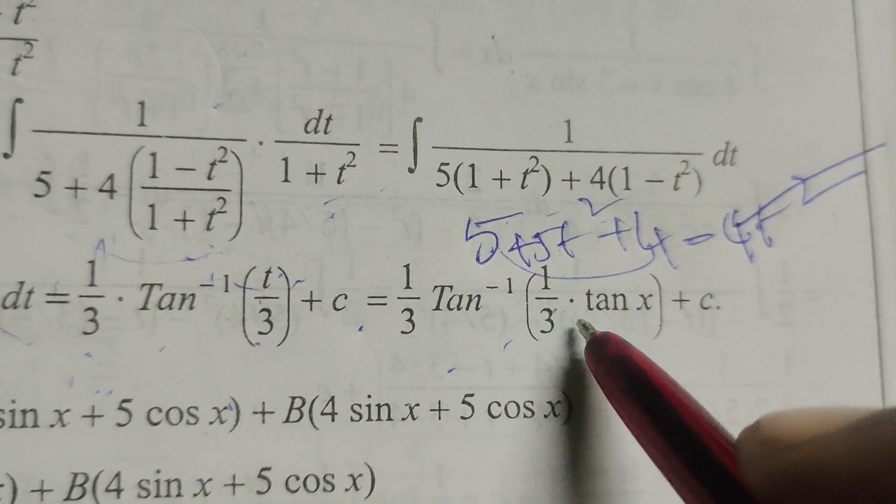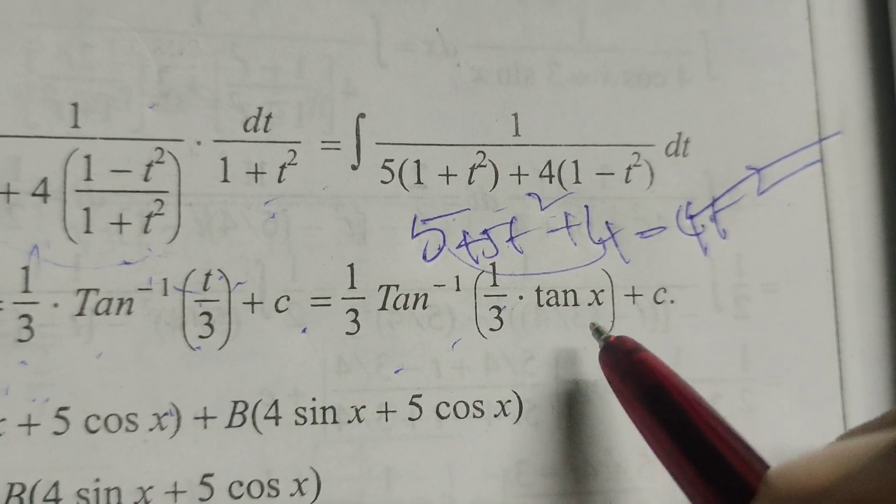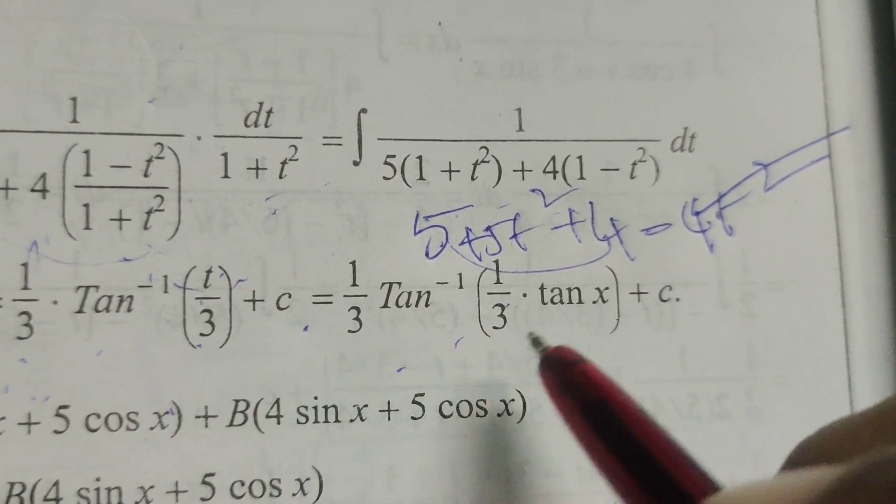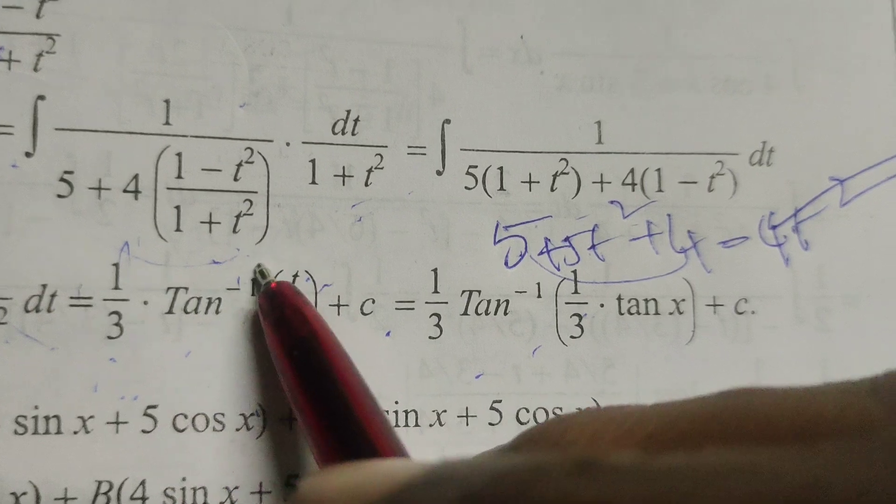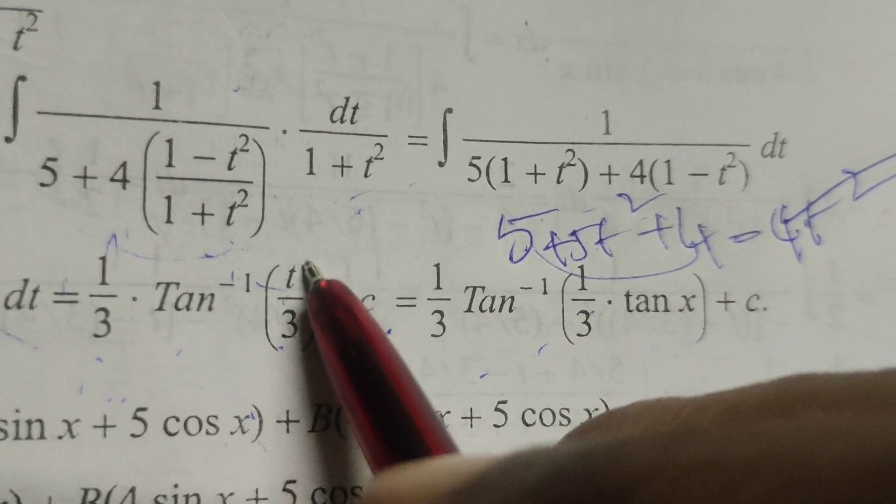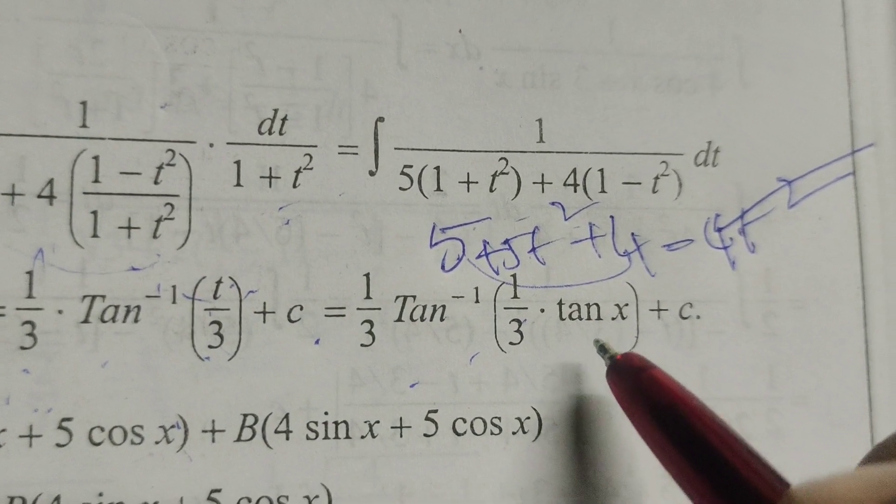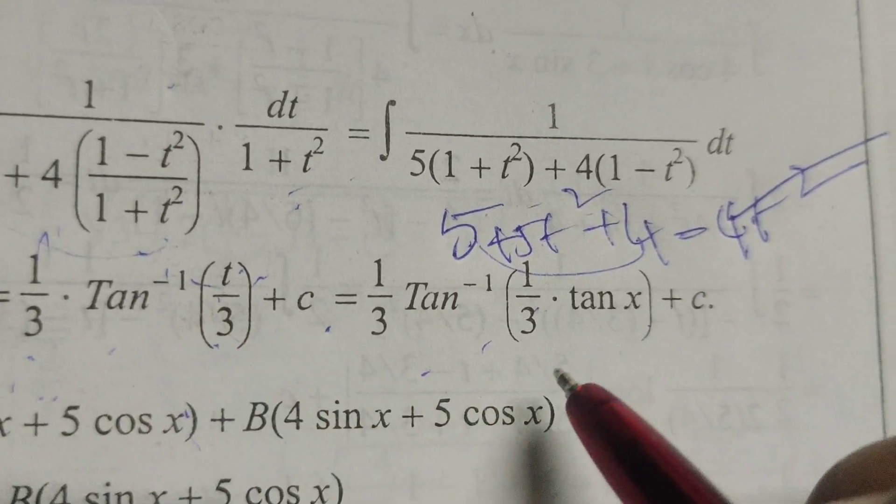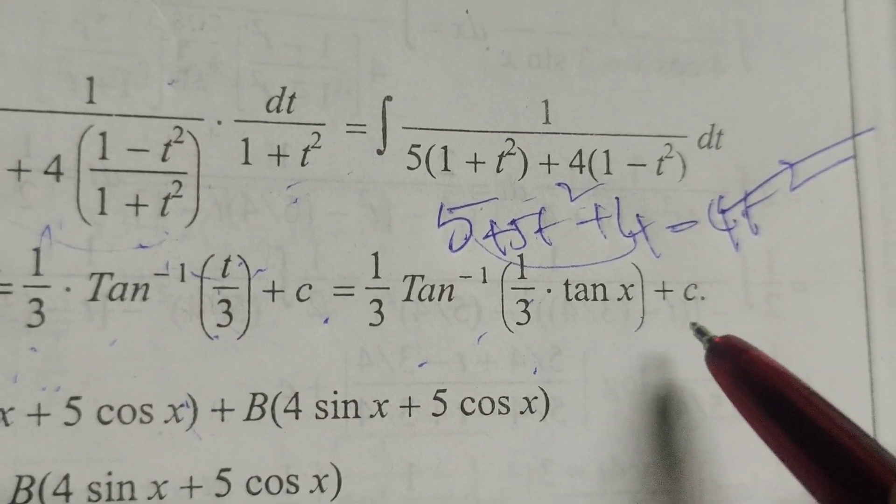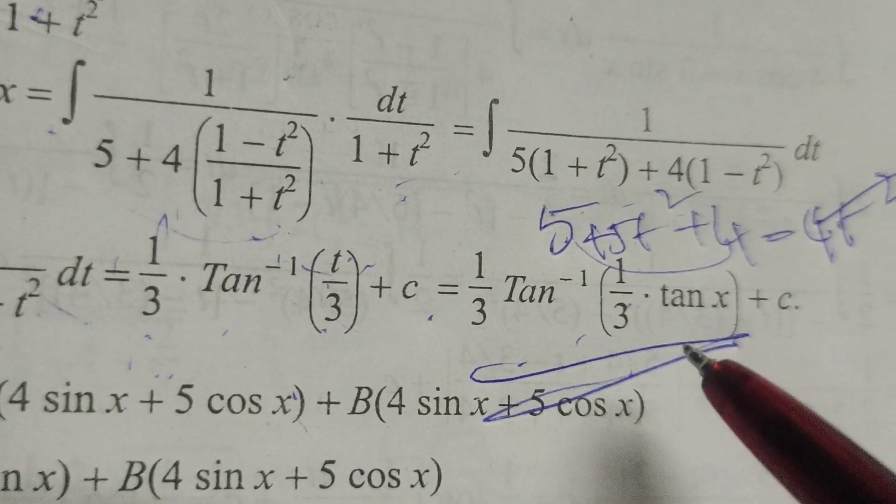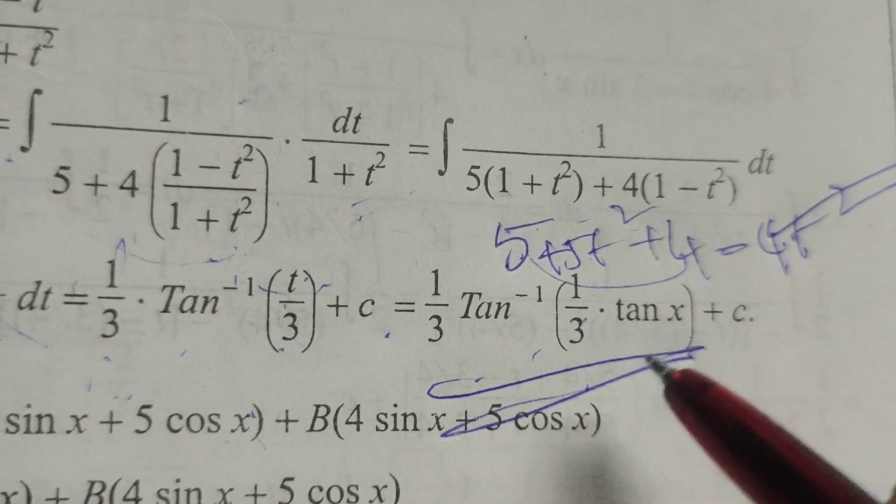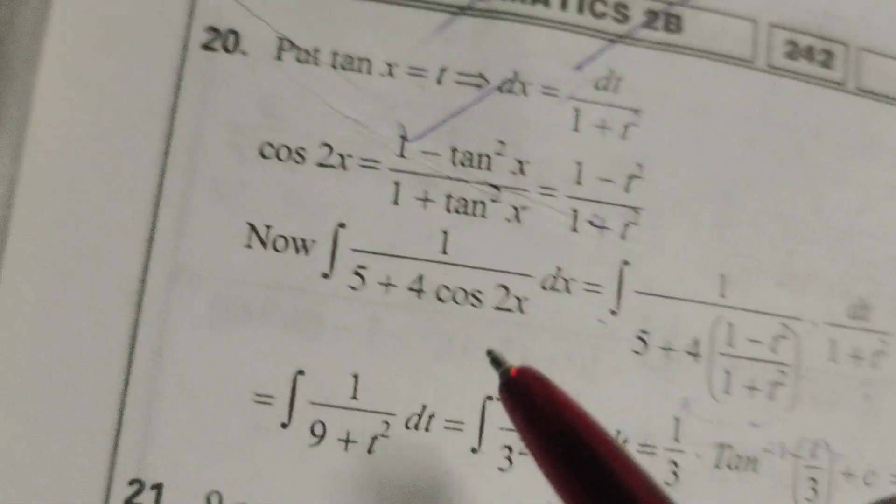Here substitute t equals tan x. So 1 by 3 tan inverse of tan x by 3 plus c. This is the solution for the given evaluated integral.